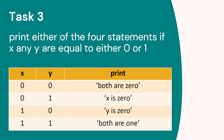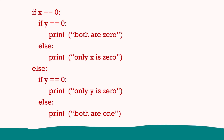Task three: we have four options. If x equals zero, we have an if-else with y — if y equals zero, print 'both are zero', else print 'only x is zero'. In the else part when x is not zero, if y is zero print 'only y is zero', else print 'both are one'. You could do this several ways, but here we have an if-else for x and then two if-else statements for y.